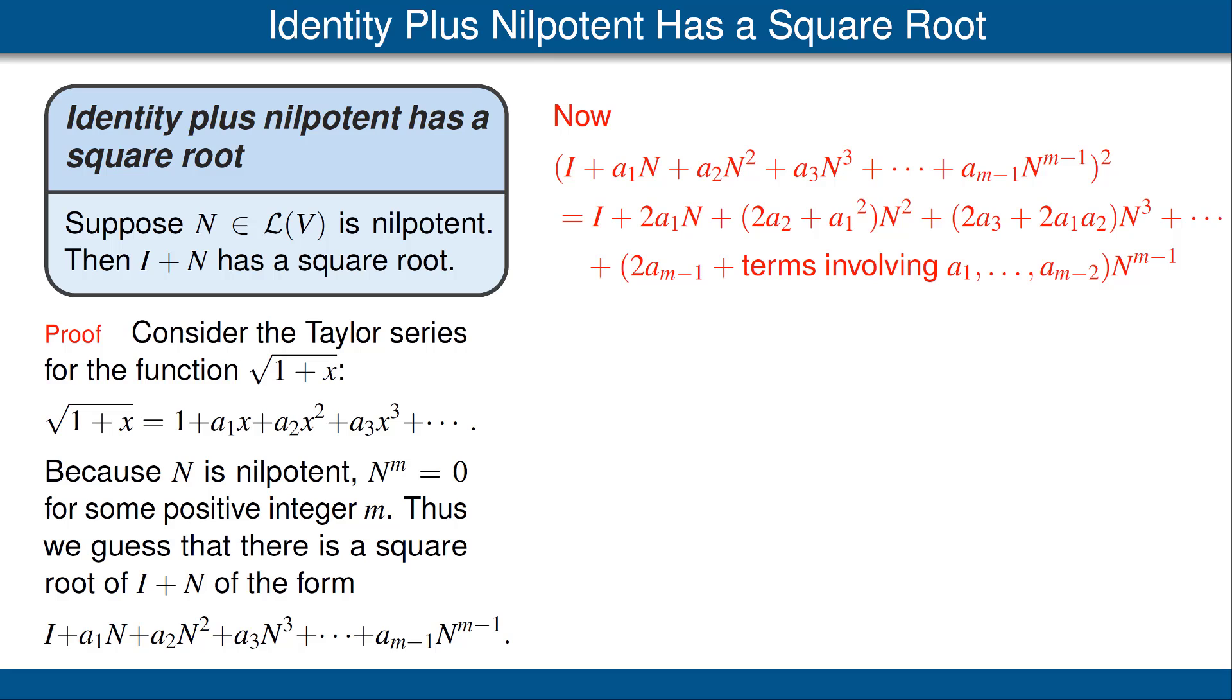Now, let's square the last line in the first column. We're hoping that when we square that, we get the identity operator plus N. But we have to do some algebra, multiplying out the square. We get the square of that expression is the identity plus 2a₁N,